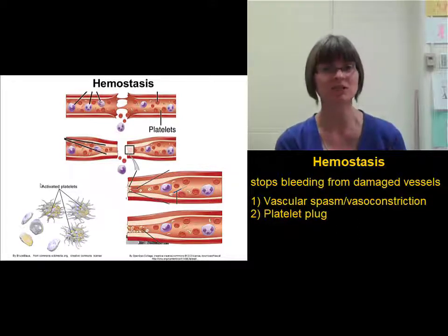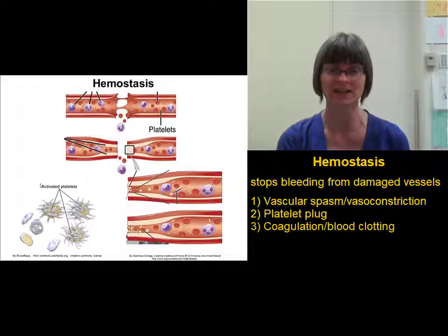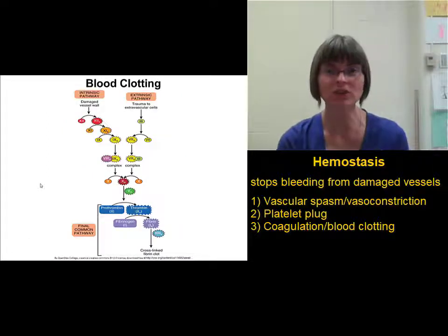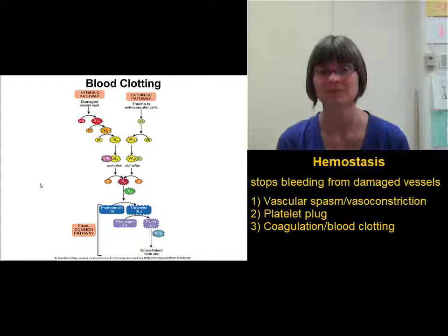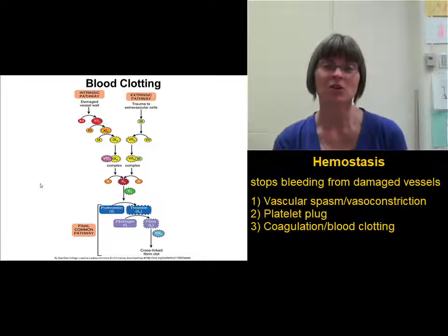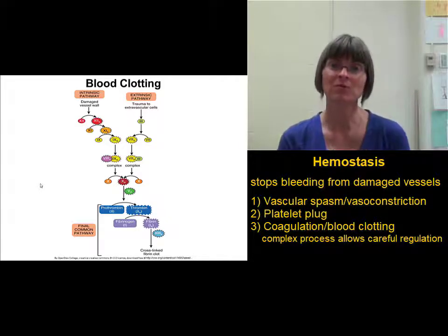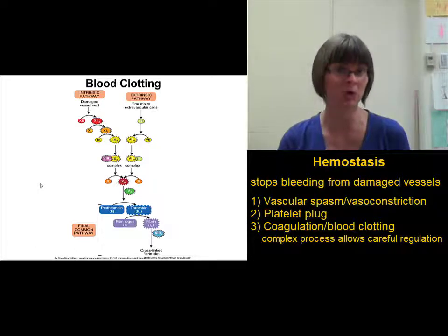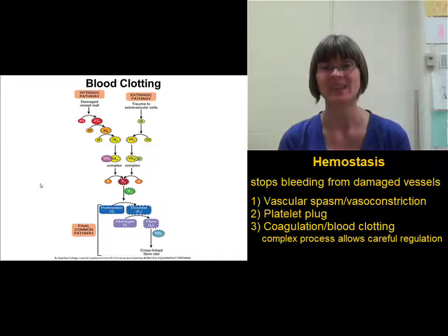We need to replace the platelet plug with something that's going to hang around a little bit better. That brings us to the third phase of hemostasis, which is actual blood clotting or coagulation. Blood clotting is a complex process — it involves over 30 different chemical reactions, 15 different protein clotting factors, and a number of different non-protein cofactors that all have to work together to form a blood clot. Whenever we see a complicated process like this, the reason usually comes down to regulation. When you have a really complicated process with lots of steps, that allows many points of regulation, so it doesn't happen when it's not supposed to.